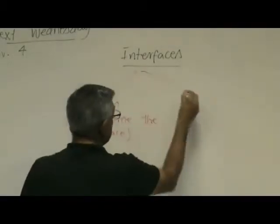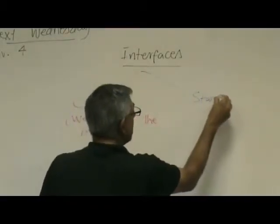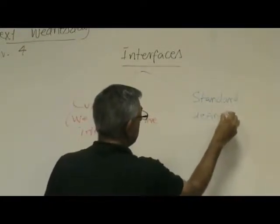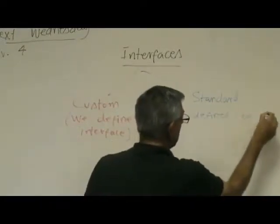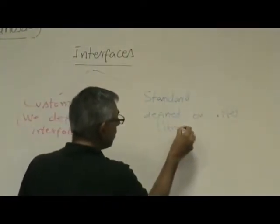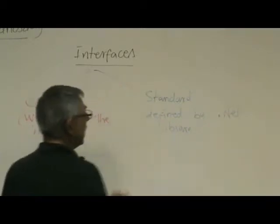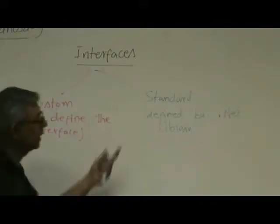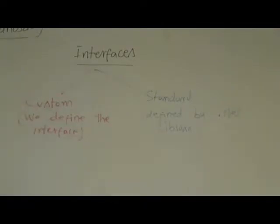So standard is basically defined by the .NET library. So the name of the method, what input it takes, what output it takes us, is already fixed by the .NET library. Our job as a programmer is to implement the interface and provide the real code, right?